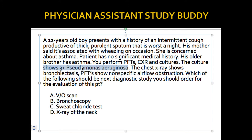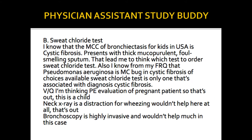I know the most common cause of cystic fibrosis infection in children in the United States is Pseudomonas aeruginosa, and the best test for cystic fibrosis is a sweat chloride test. The chest x-ray shows bronchiectasis — another giveaway that this is cystic fibrosis. Bronchiectasis is the most common finding. Sweat chloride test is your safe answer. VQ is for pregnant patients concerned about PE. Neck x-ray is for epiglottitis. Bronchoscopy is highly invasive and won't be much help here.